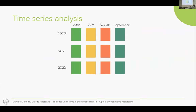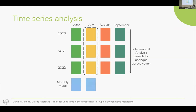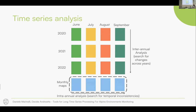Instead of viewing the time series as a classical one-dimensional signal, we organize it into a grid-like structure that allows us to better model the cyclical nature of phenological cycles. This gives us two directions of analysis: the vertical direction, which we call inter-annual analysis, allows us to search for changes across different years; and the intra-annual direction allows us to preserve temporal resolution while searching for temporal inconsistencies — for example, detecting something in July that is not present in August.